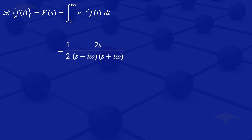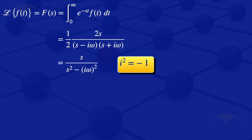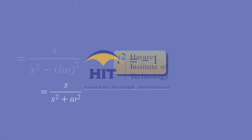We divide throughout by 2 and get s divided by s squared minus i omega squared, since s minus i omega times s plus i omega gives s squared minus i omega squared. Since i is an imaginary number, i squared equals minus 1, so substituting that our expression becomes s divided by s squared plus omega squared. Therefore the Laplace transform of cosine of omega t is s divided by s squared plus omega squared.